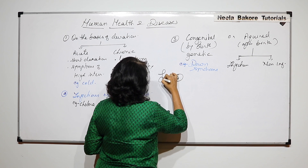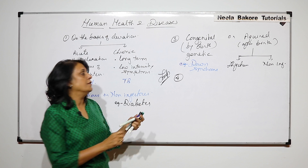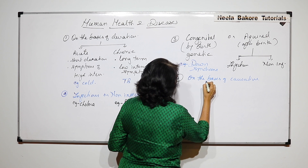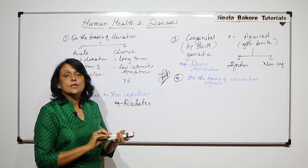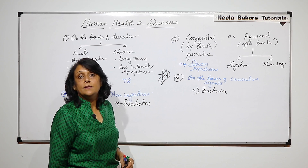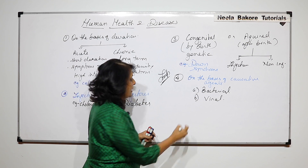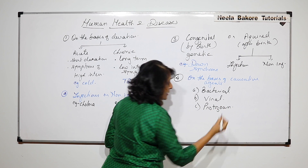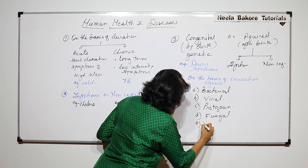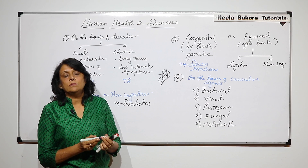The fourth and most important classification — as given in our NCERT — is on the basis of the causative agent. Causative agents can be bacteria (bacterial diseases), virus (viral diseases), protozoa (protozoan diseases), fungi (fungal diseases), and helminths (helminth diseases). Let us write one example of each.